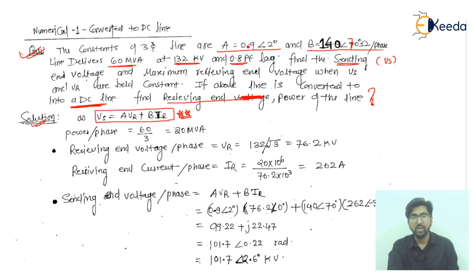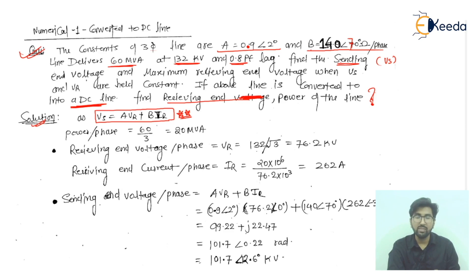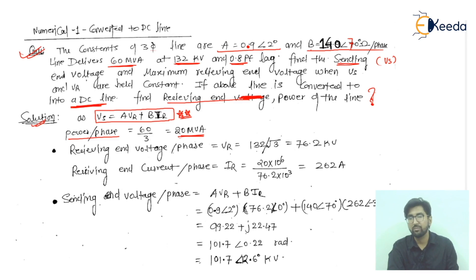A and B are used in the ABCD parameters, also called transmission parameters. The power per phase is 60 divided by 3, which equals 20 MVA, because we are using a three-phase line and need per-phase values.